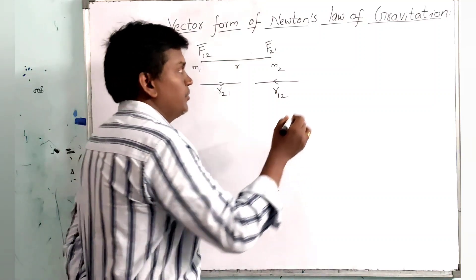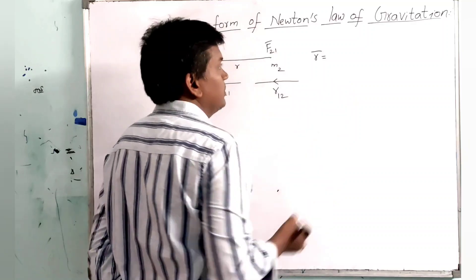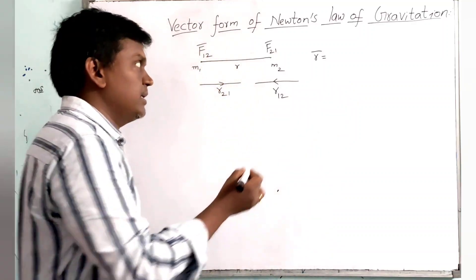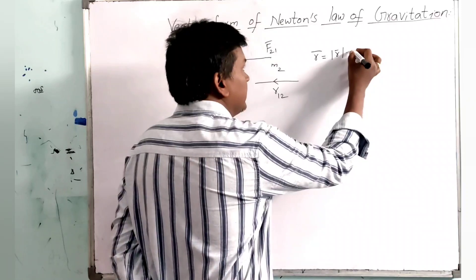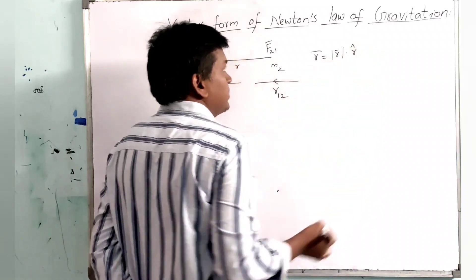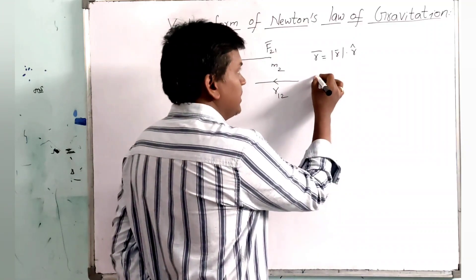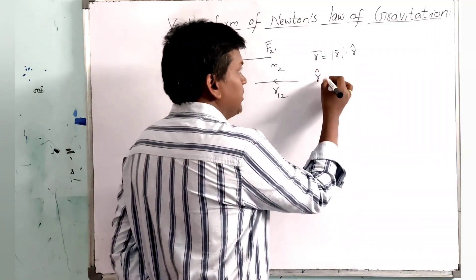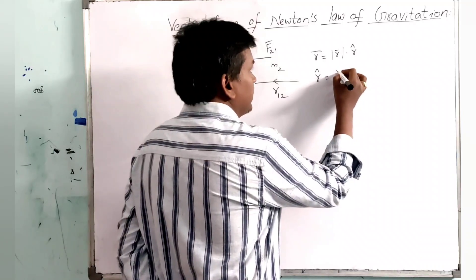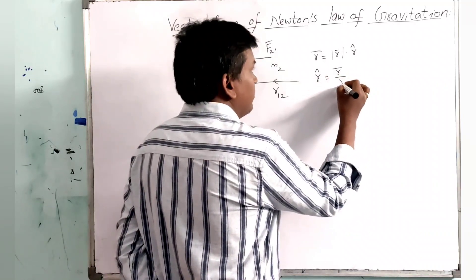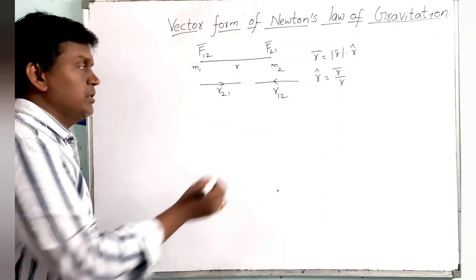From vectors, we know that vector R bar equals the magnitude of the vector multiplied by its direction — that is, a unit vector — giving the full vector. This can be represented as unit vector R cap equal to R bar divided by the modulus of R. We will use this later.